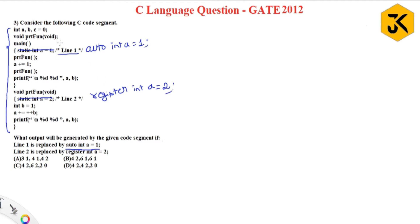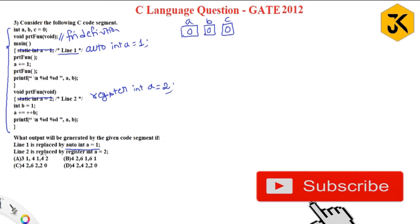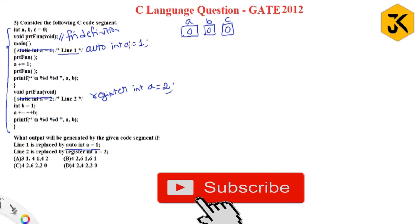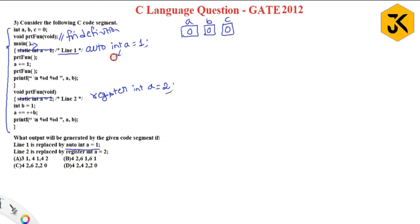To answer this, let me trace line by line. In the first line, they have declared three integer variables a, b, c assigned with the value 0. Then they have defined a function called 'print function'. Every C program starts executing from the main method. Outside main, a, b, c are global variables. Inside main, a local variable 'a' is created with a value of 1.